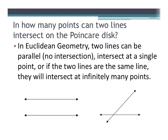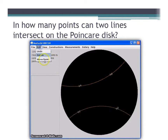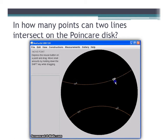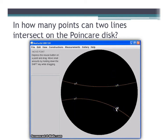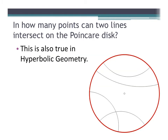How many points can two lines intersect on the Poincaré disk? In Euclidean geometry, two lines can be parallel with no intersection, intersect at a single point, or if they are the same line, intersect at infinitely many points. Drawing lines AB and CD and moving them around, it is possible for them to never intersect — so they would be parallel — and it is also possible to move line CD so that it intersects line AB at a single point. So two lines on the Poincaré disk can intersect not at all or just once.